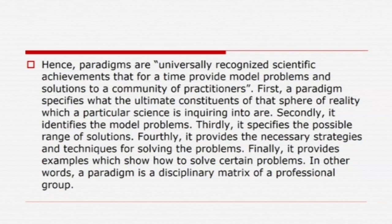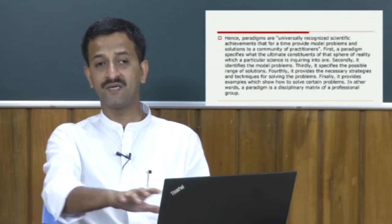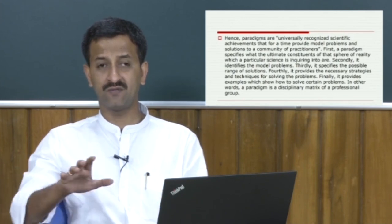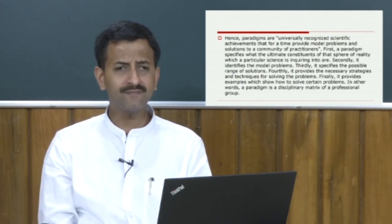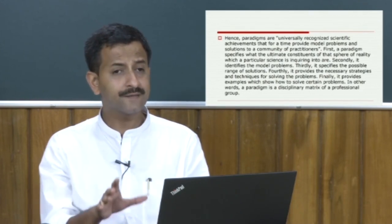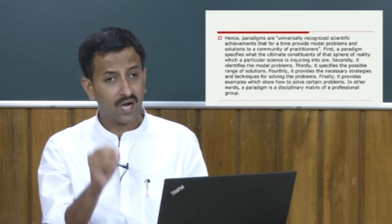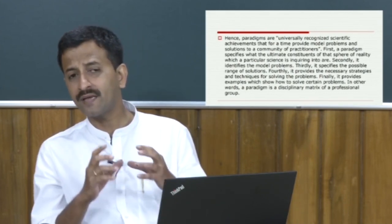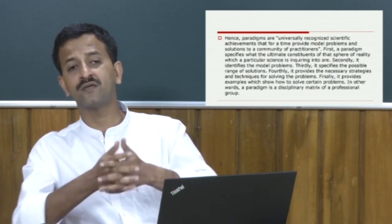In other words, a paradigm is a disciplinary matrix of a professional group. A paradigm specifies the entire subject matter — the scope and ambit of that particular science must be known through that paradigm. Ptolemy's Almagest, then Copernicus, Newton, Einstein, and Darwin all provided this. A paradigm tries to identify the model problems. For example: dinosaurs and anacondas were far more powerful compared to human species — if you look at their energy, stamina, killer instinct, they could have survived — so why could they not survive while human beings did?